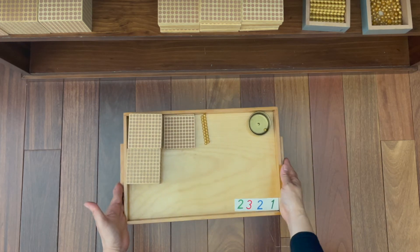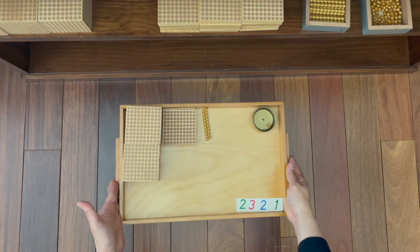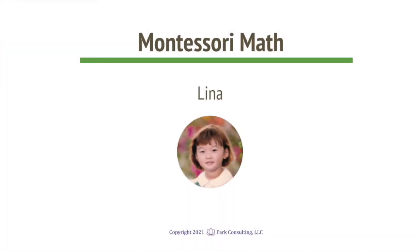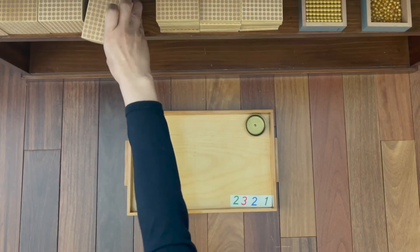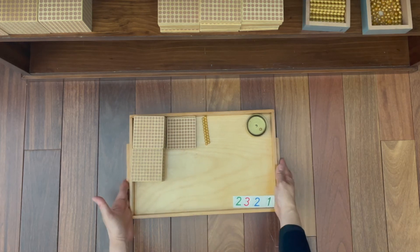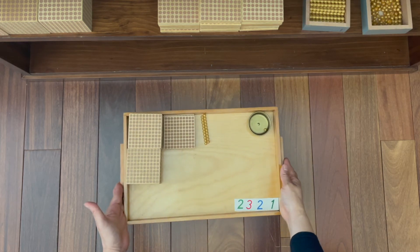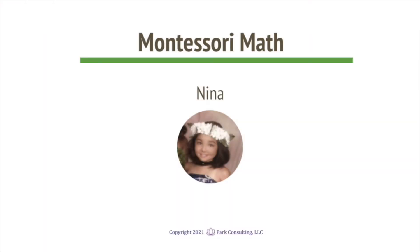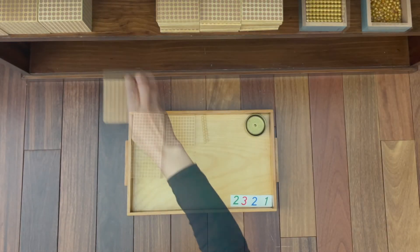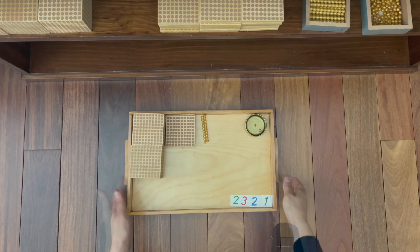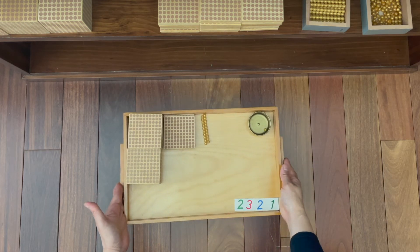Johan, you brought two thousands, three hundreds, two tens, one unit. Nina, you brought two thousands, three hundreds, two tens, one unit.